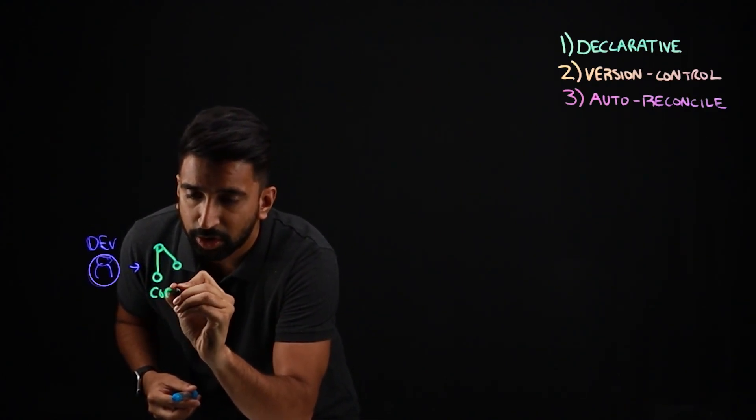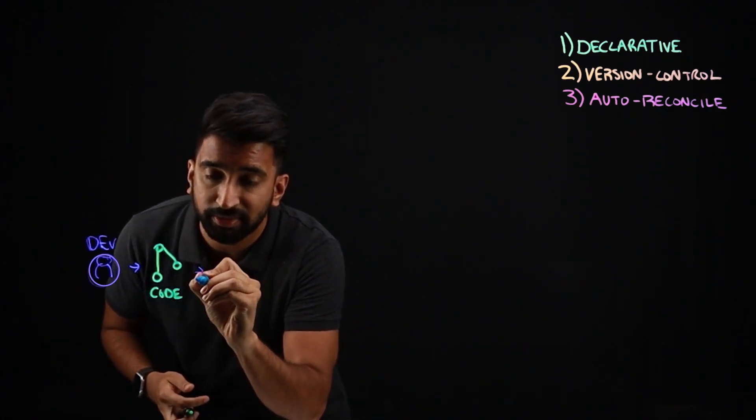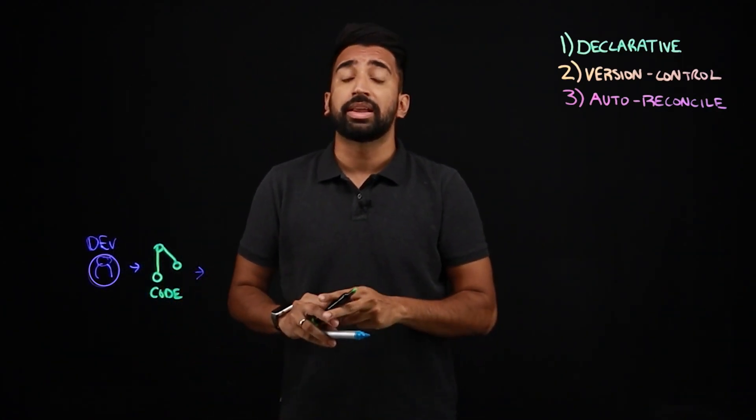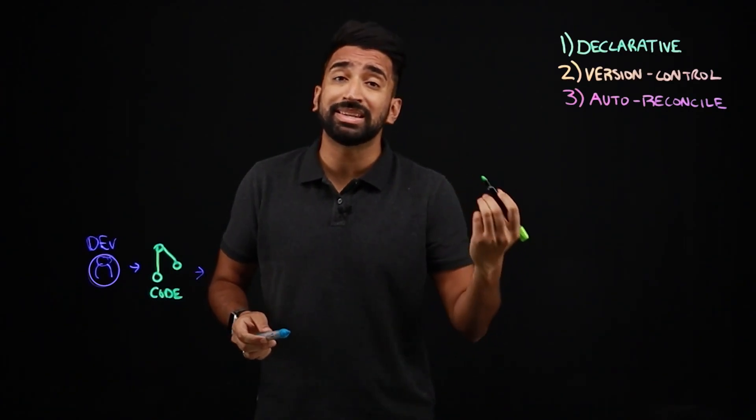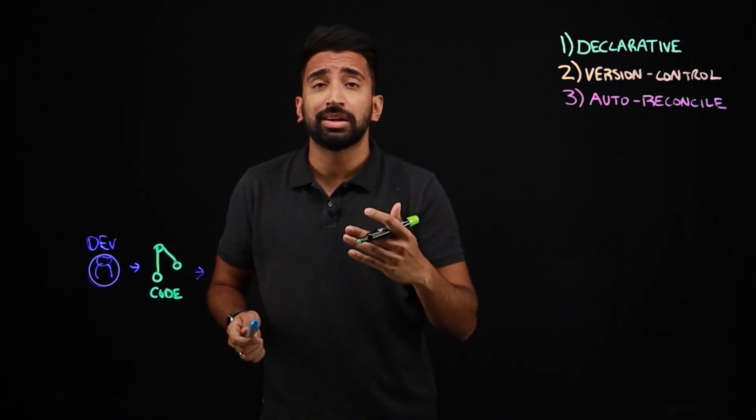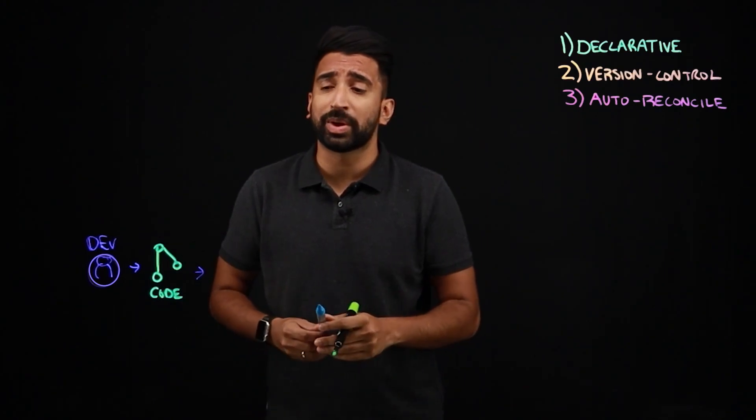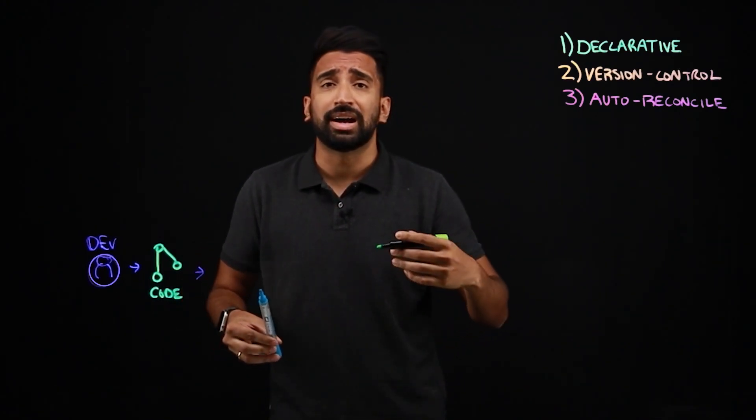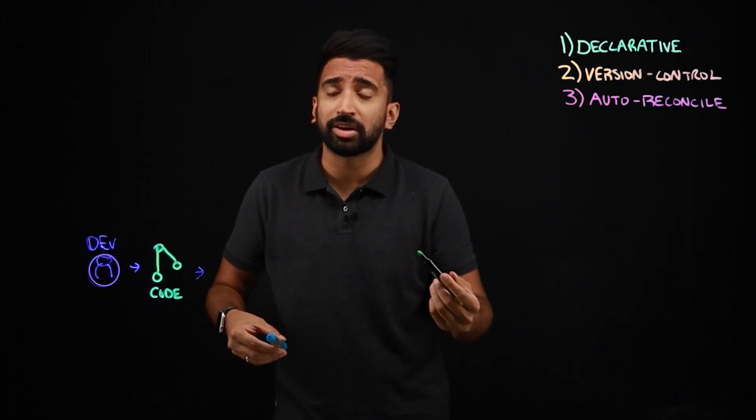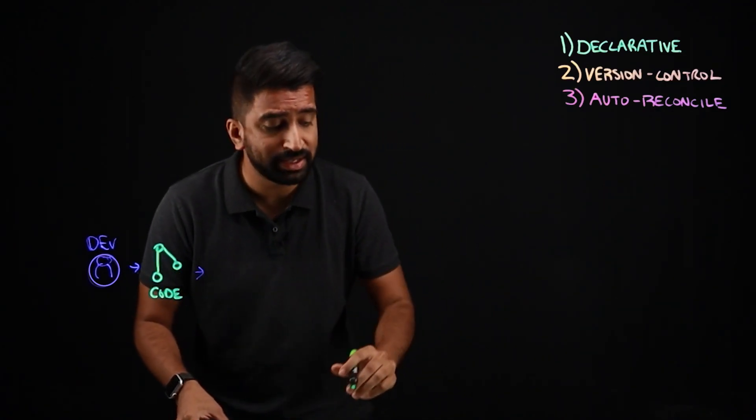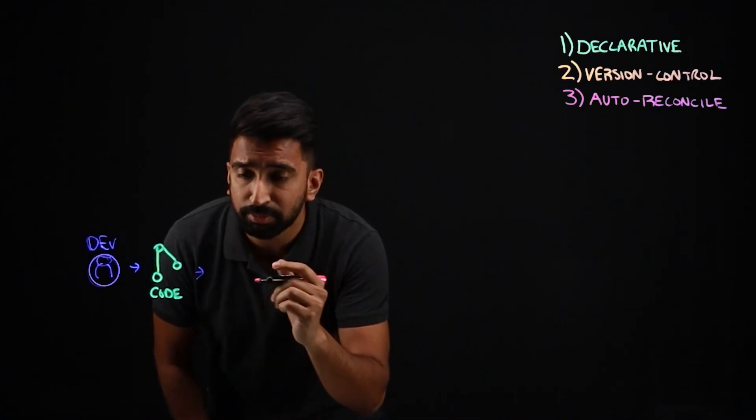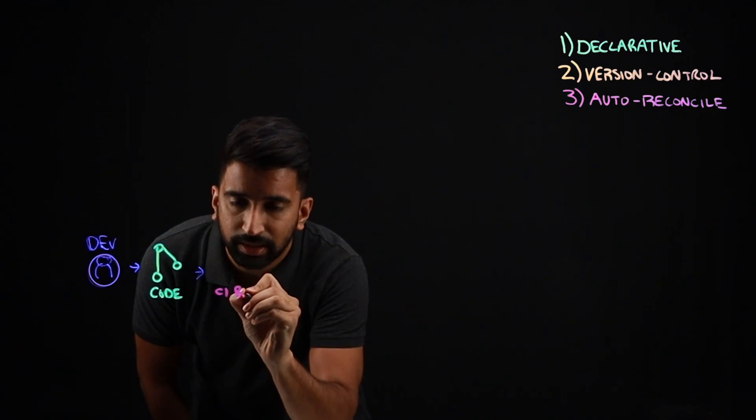So this is a code repo, and this kicks off a CI build. The thing with GitOps is it's not very opinionated when it comes to CI tools. So you can continue using your existing tools, whether it's something like Jenkins, GitHub Actions, maybe Code Commit on AWS, but we're not really opinionated here. But we're going to simply write this out as CI build.